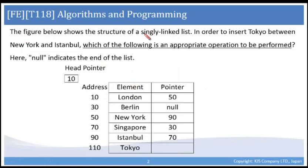The figure below shows the structure of a singly linked list. In order to insert Tokyo between New York and Istanbul, which of the following is an appropriate operation to be performed? Here, null indicates the pointer to the end of the list, and the head pointer is 10.